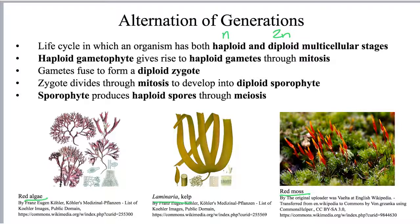In alternation of generations, you have a gametophyte phase and a sporophyte phase. The suffix '-phyte' just means plant or plant-like. Think of a gametophyte as a gamete-producing plant stage. All of the tissue that makes up the gametophyte is haploid — all cells have one set of chromosomes. The gametophyte produces gametes that are also haploid, and these are produced through mitosis, since haploid has to give rise to haploid.